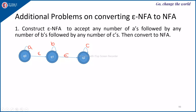Additional problem: construct an epsilon NFA to accept any number of A's followed by any number of B's followed by any number of C's, then convert it into an NFA. This is the required epsilon NFA — all states are final states, Q0 on any number of A's is accepting, followed by any number of B's, followed by any number of C's. Find the epsilon closure of Q0, Q1, Q2 first and apply the same procedure to get the equivalent NFA without epsilon transitions. Thank you.